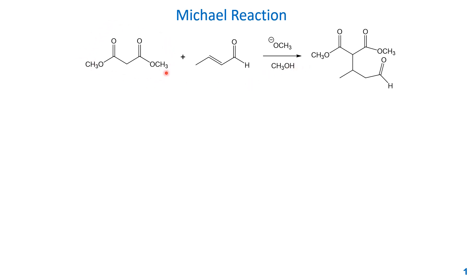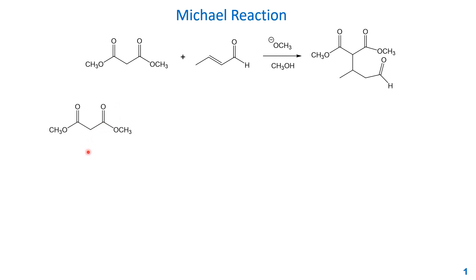You can make a new carbon-carbon bond in the product — this is the Michael reaction. Usually we call this reactant forming the enolate the Michael donor, and this alpha-beta unsaturated carbonyl compound is called the Michael acceptor. So: donor, acceptor — nucleophile, electrophile.